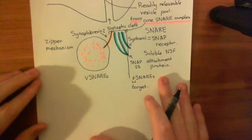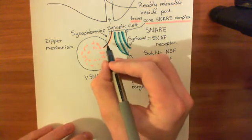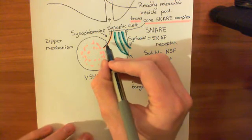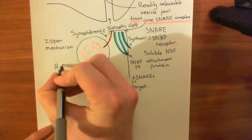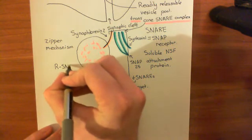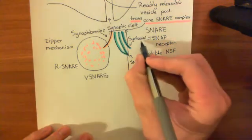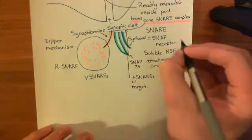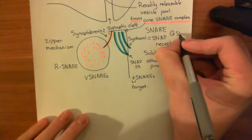Now, what I want to discuss with you is a bit more terminology, because you will often hear people refer to synaptobrevin 2 as what is known as an R-SNARE. And you will hear people refer to syntaxin 1 and SNAP-25 as Q-SNAREs.